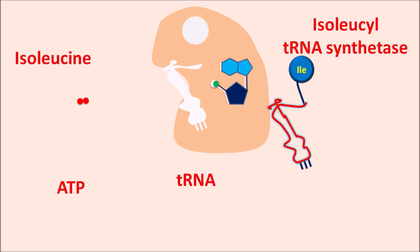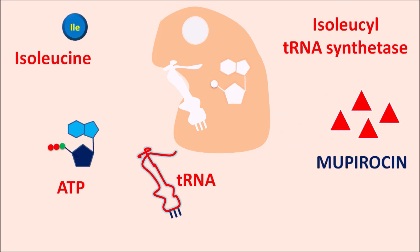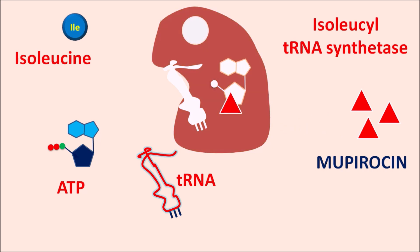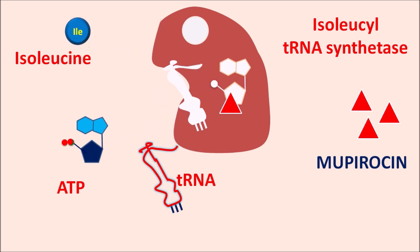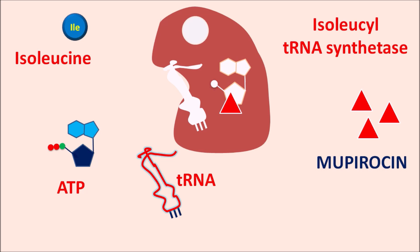This isoleucyl-tRNA is released from the enzyme and is ready for incorporation into the growing peptide chain. This is a crucial step in bacterial protein synthesis. Mupirocin binds to this enzyme, inhibiting its activity, so that isoleucine, ATP, and tRNA cannot bind — preventing formation of aminoacyl-tRNA and thereby inhibiting bacterial protein synthesis.